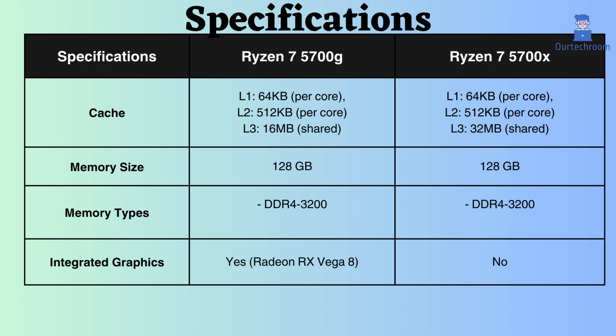Both processors support up to 128 GB of DDR4 RAM with a maximum frequency of 3200 MHz. The Ryzen 7 5700G features integrated graphics with a boost frequency of 2000 MHz, while the Ryzen 7 5700X does not have integrated graphics.